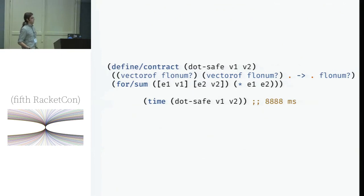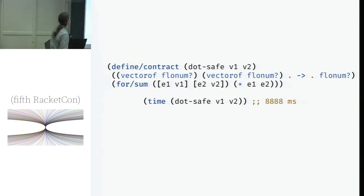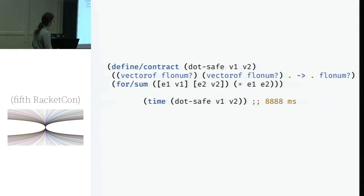So Racket already has a JIT per se, but let's start out with a motivating example to see what's wrong with the current situation. So here's a simple definition of our dot product function. We even added some contracts in there to make it nice and safe. Unfortunately, it's not particularly fast. It takes about nine seconds to run on the sample data that I cooked up.